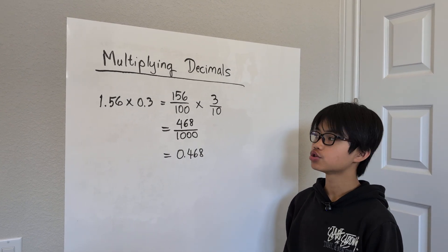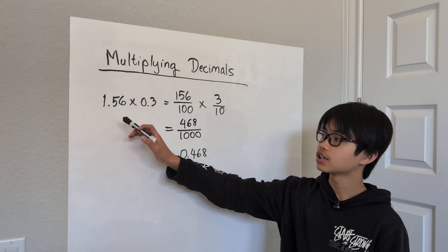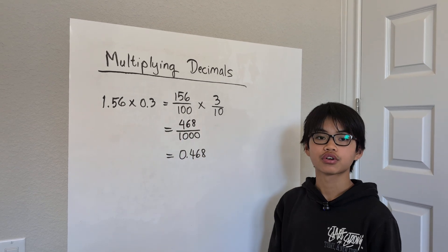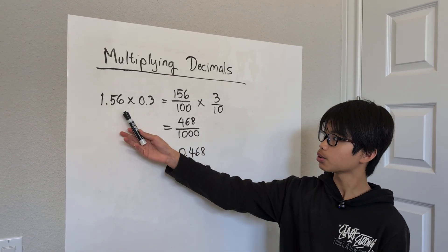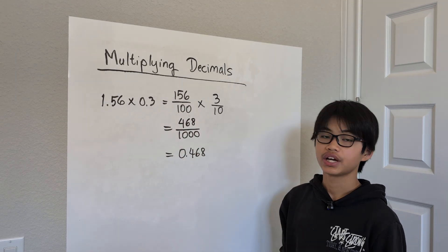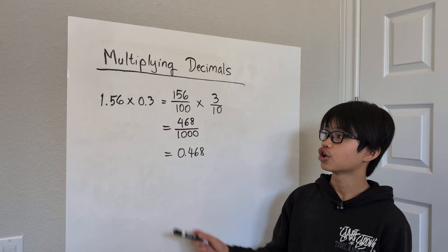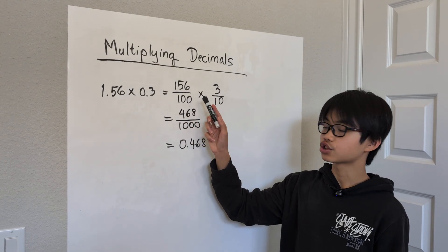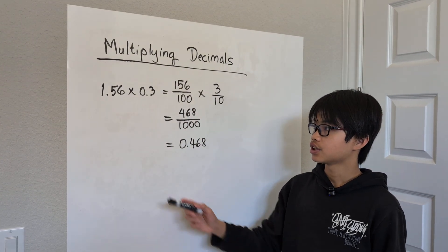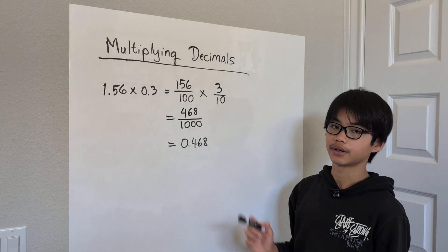In this example, we will be using 1.56 times 0.3. The first step when multiplying decimals is to change it from a decimal form to a fraction form. In this example, we can change 1.56 to become 156 over 100 and 0.3 to become 3 over 10.